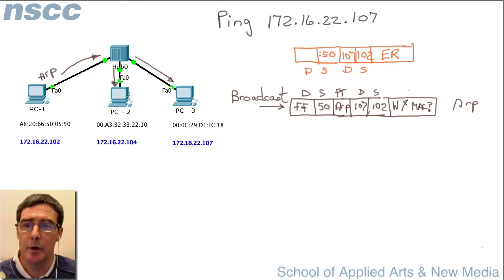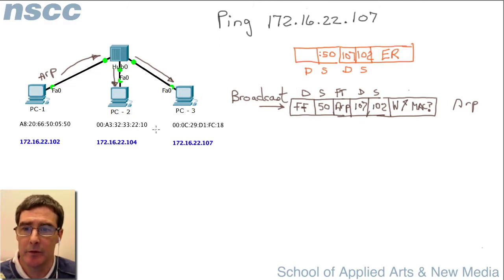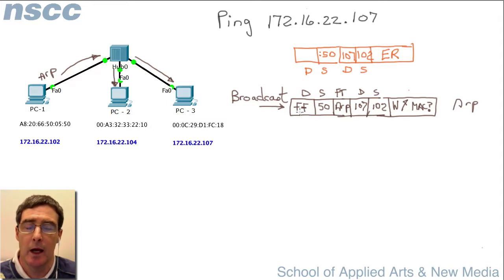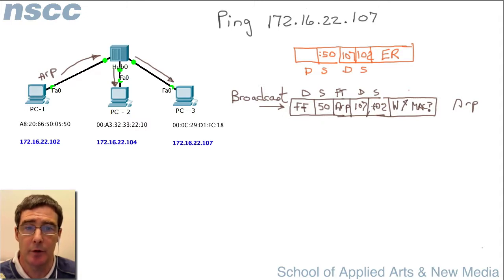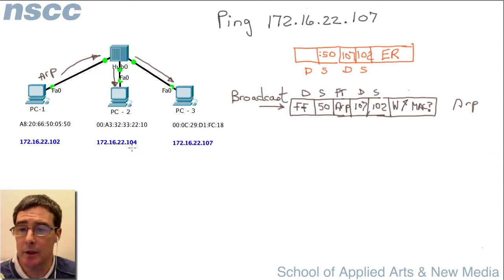Let's look at PC2 first. It looks at the destination of the frame — is it the same as its own address? No. But it also checks if it's a broadcast. It is — all ones — so it starts to process it. It's an ARP frame asking: do you have IP address 107? PC2 doesn't. It looks at its own IP address, which is 104, so it discards that frame.